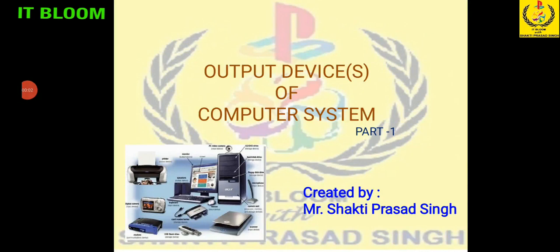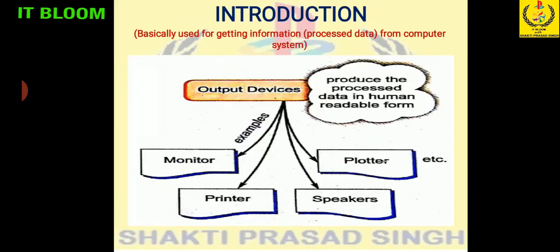Hello friends, today I am going to start output devices of computer system. Basically, output devices are used for getting information, that is the processed data from the computer system. First we give the input data, then it will be processed, and after that we will get it as an output. That output is in a human readable form because users are humans giving human understandable language as input data, and accordingly it will get the output as a human understandable form.